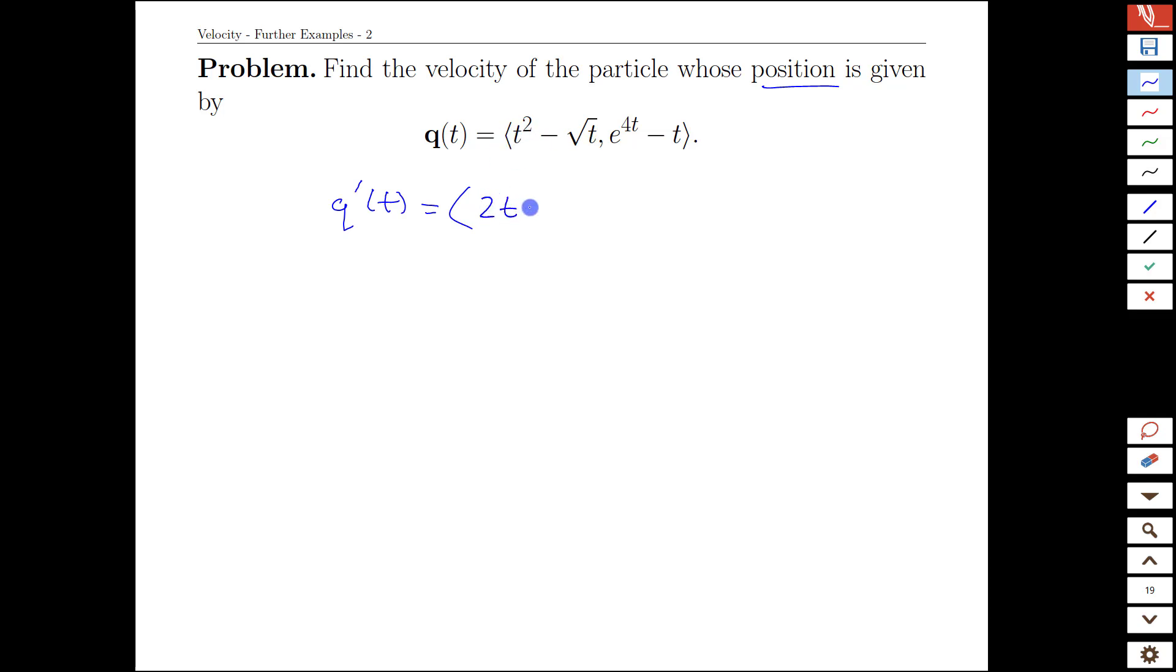So we're going to have two t, remembering that square root of t is easier to differentiate when it's written as a power, t to the 1 half, and so we're going to have 1 half t to the negative 1 half. That's a perfectly acceptable way to write that. You don't have to write it in square roots unless you like to.